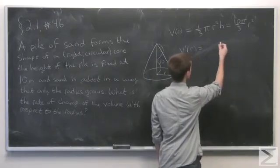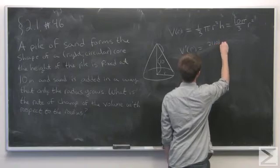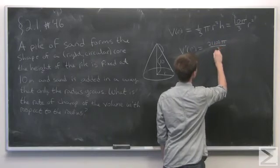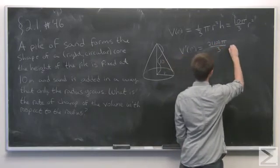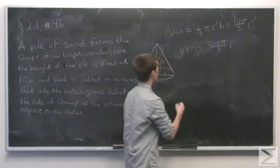So using the power rule, we have 2 times 10π over 3. And lower the power by 1, which leaves us with r.